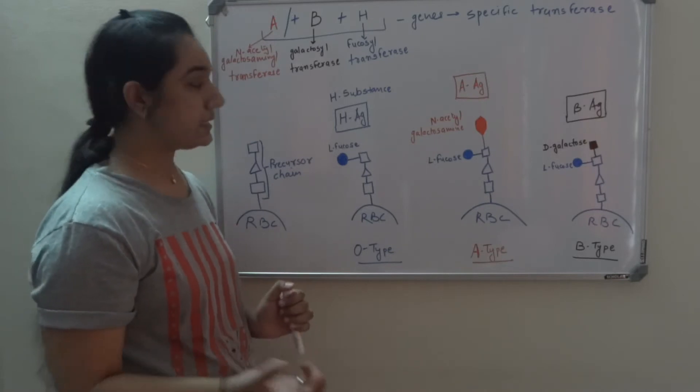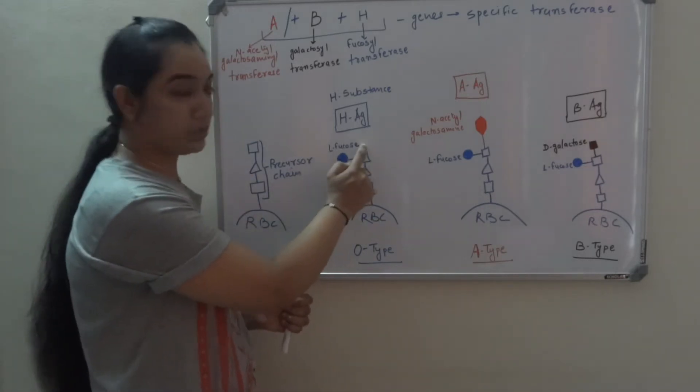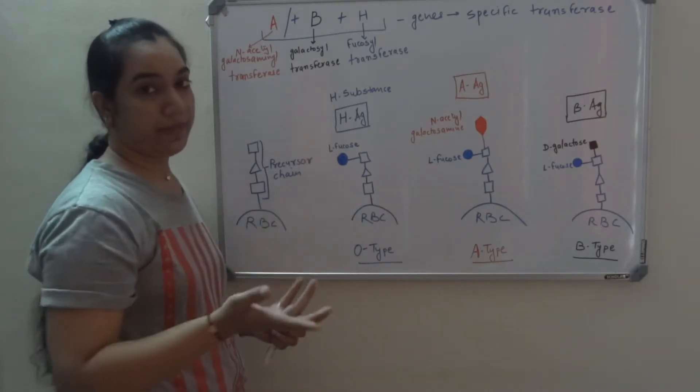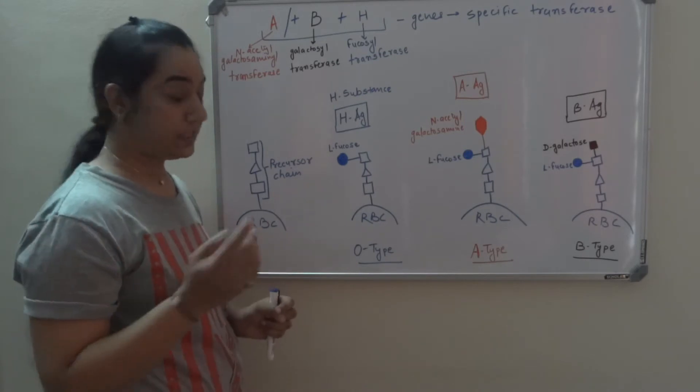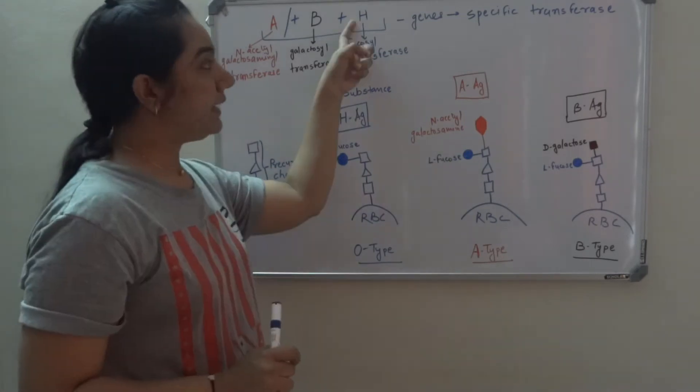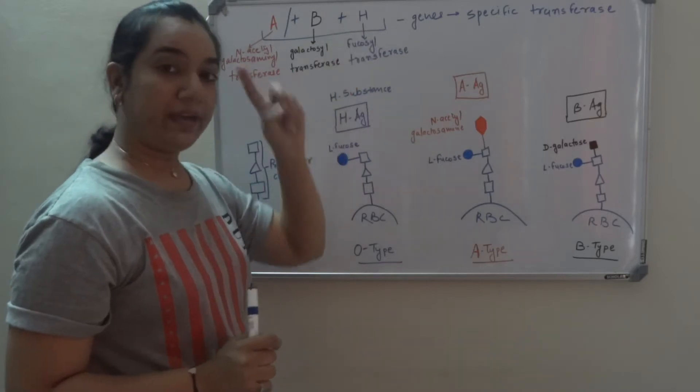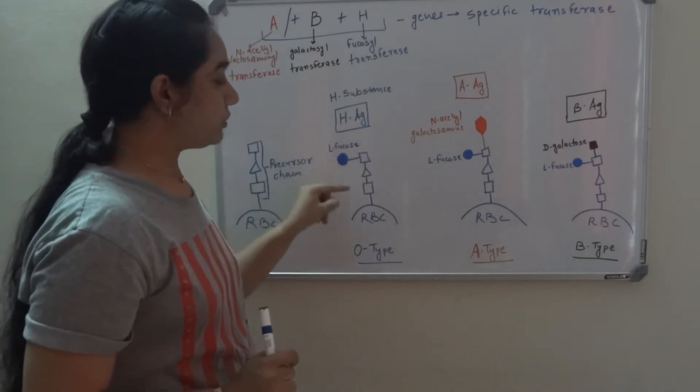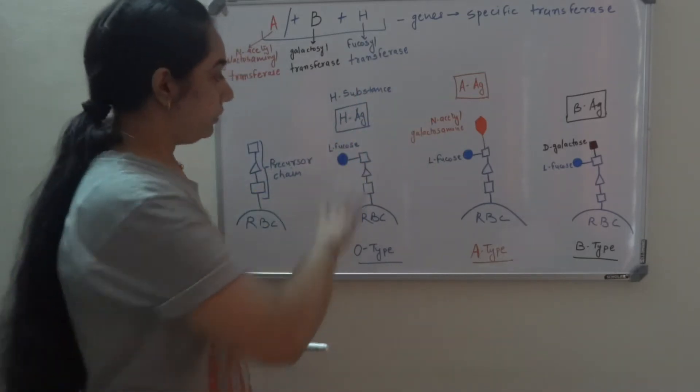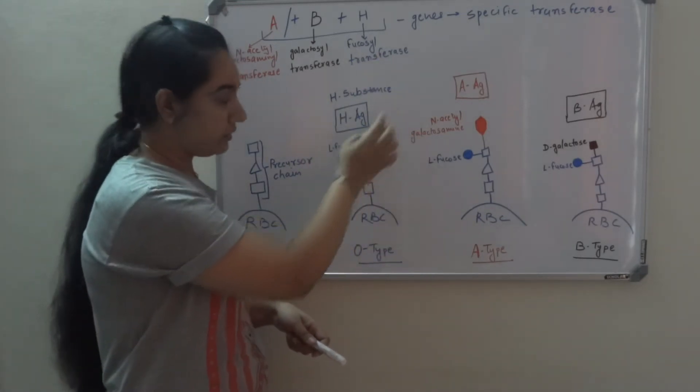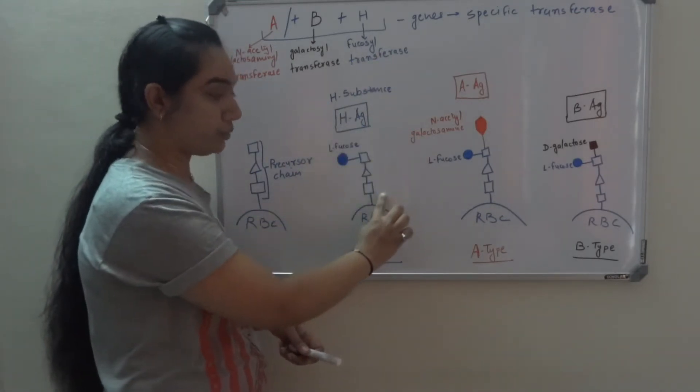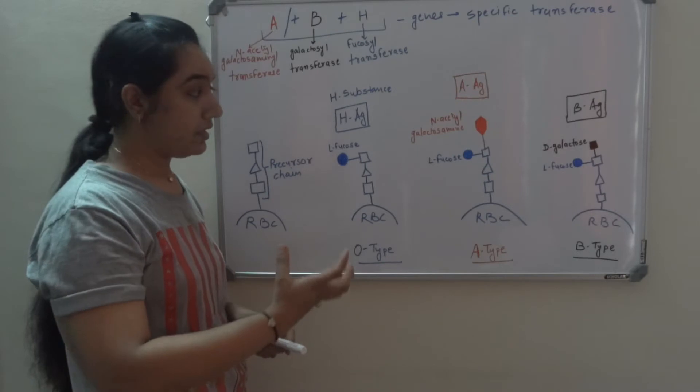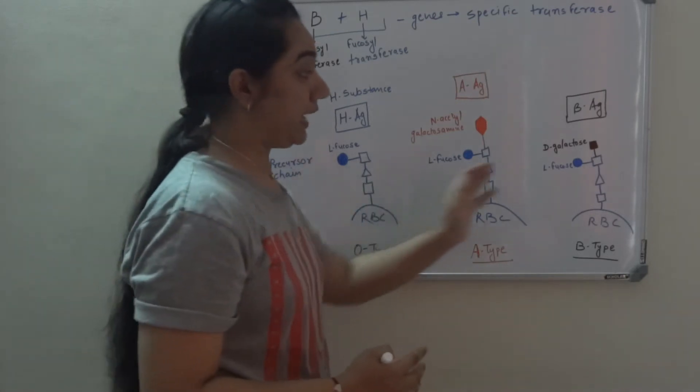And what is this H substance? H substance is addition of L-fucose to the precursor chain of RBC. This precursor chain can be any oligosaccharide or glycoprotein present on RBC plasma membrane. So we contain H gene that codes for specific transferase which transfers L-fucose to the precursor chain. This assembly is H substance where you have L-fucose attached to precursor chain. And this H substance makes or builds the foundation for blood group A and B.